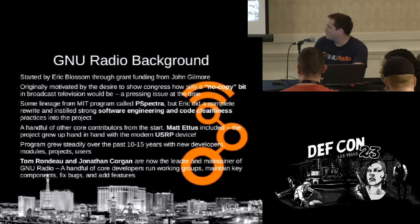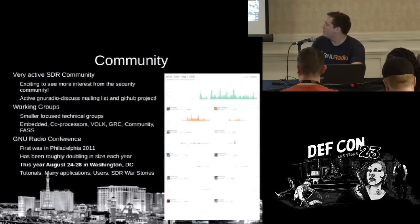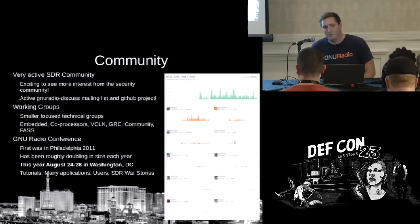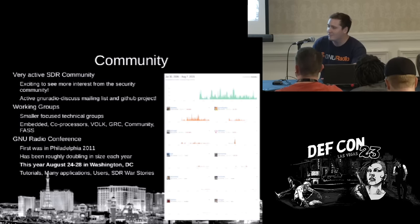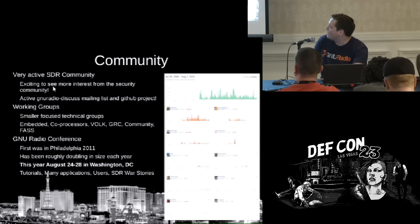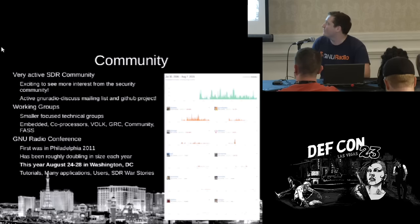There's a handful of core developers that work on feature groups and maintenance. We've moved to GitHub for development, so if you want to submit changes to GNU Radio, pull requests on GitHub are a great way to do it. They get looked at, commented, and merged if Corgan is happy and they pass the tests. There's a long testing regression process that gets run before merging things so that we don't break the code repeatedly.